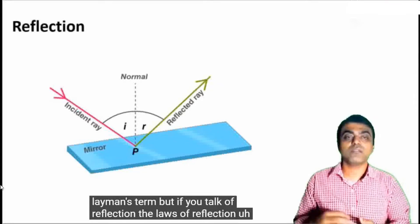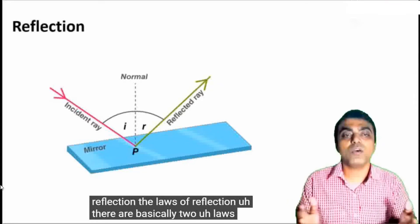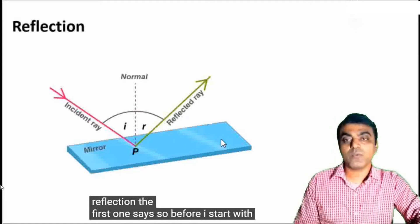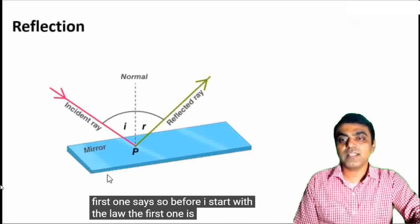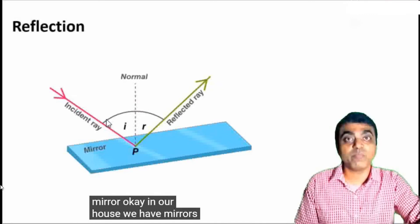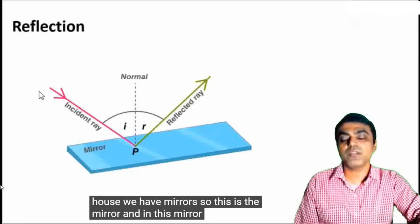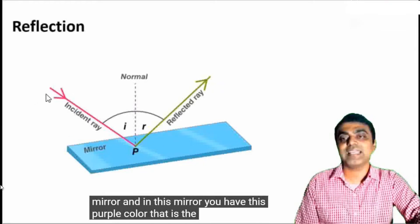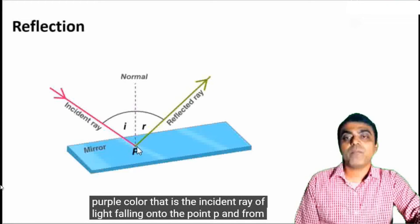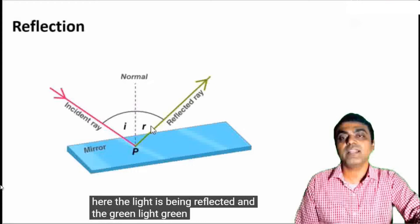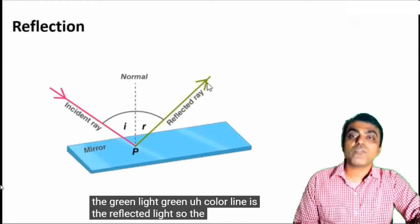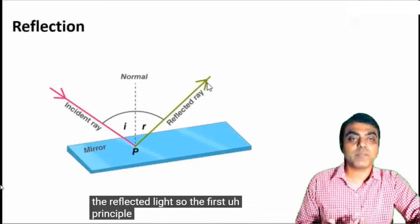If you talk of reflection, the laws of reflection, there are basically two laws of reflection. The first one: this is a mirror — in our house we have mirrors. In this mirror, the purple color is the incident ray of light falling onto the point P, and from here the light is being reflected as the green line, which is the reflected light.